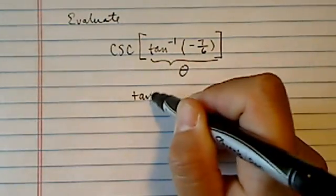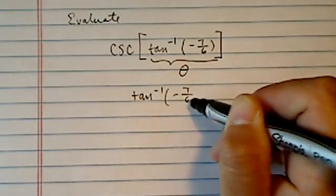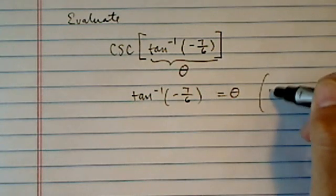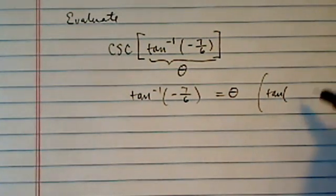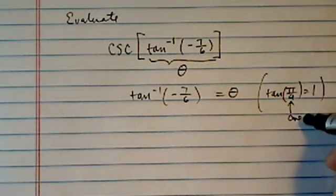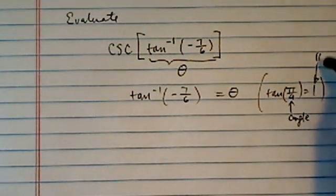The critical thing you need to recognize is that arc tangent gives you back the angle, which is different from if we just go the forward way. Tangent of pi over 4 equals 1. See here, we put an angle in here and we end up with a number,